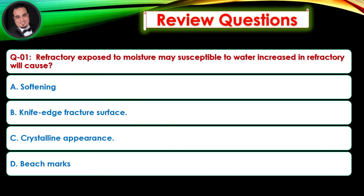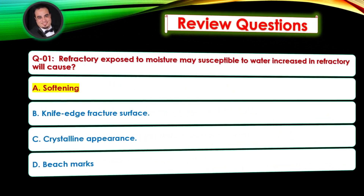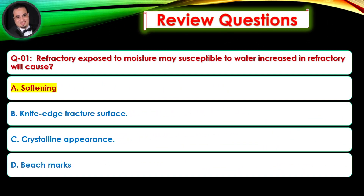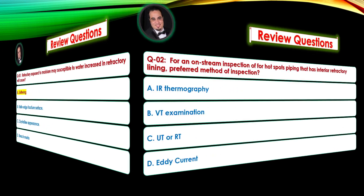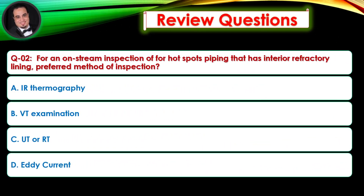Review question one: Refractory exposed to moisture may be susceptible — increased moisture in refractory will cause — Answer: A. Review question two: For on-stream inspection for hot spots on piping with interior refractory lining, the preferred method of inspection — Answer: A.